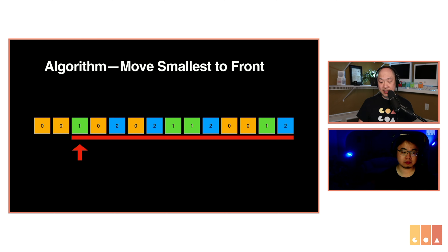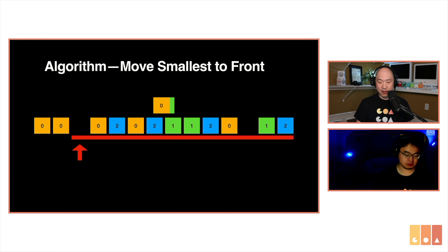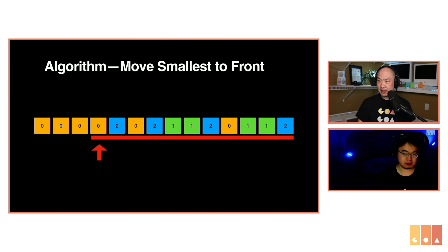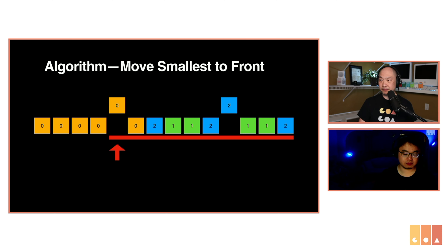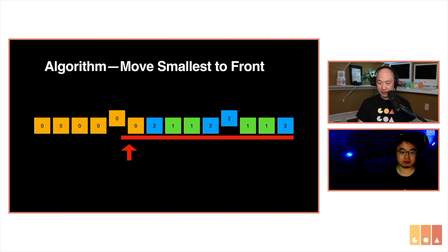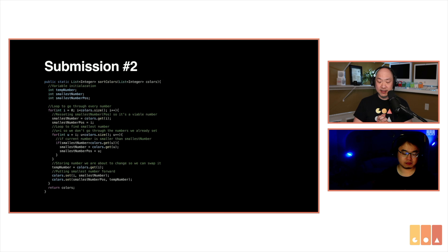Then it goes on to the next one. It says: is there any number smaller than one? In this case it's a zero, and because it goes through the entire list, it picks the zero at the very end and swaps it. And so forth. It then gets to the zero, which is already the smallest, and then goes to the two, finds the smallest, and swaps that out.